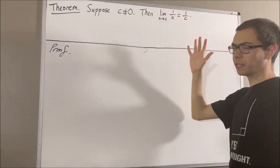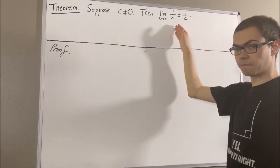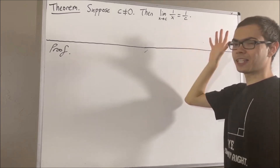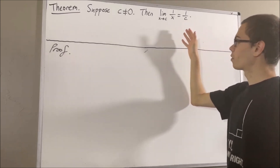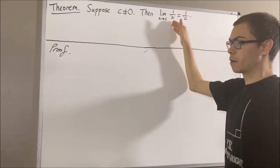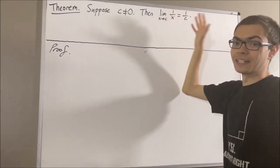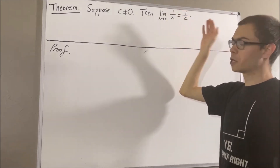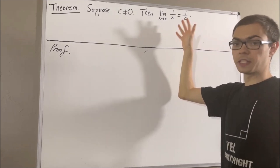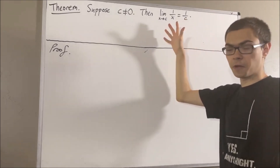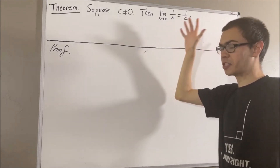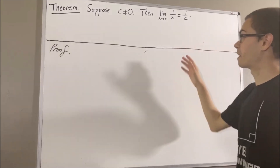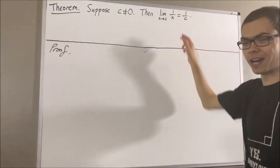Now really, we're dealing with the limit of a function. What function exactly? Well, we can perform 1 over x for any non-zero real number x. So we'll say that the function we're dealing with is the function f, from the set of non-zero real numbers to the real numbers, defined by f of x equals 1 over x.